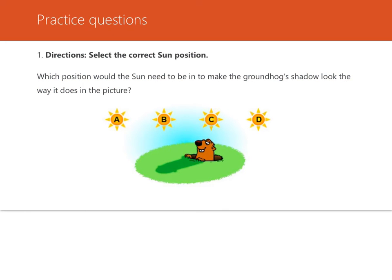Let's do some practice questions. Select the correct sun position. So is the sun position going to be here, here, here, or here? Which position would the sun need to be in to make the groundhog's shadow look the way it does in the picture? Where would the sun be if the shadow is in this direction?